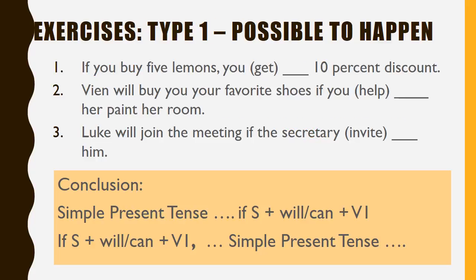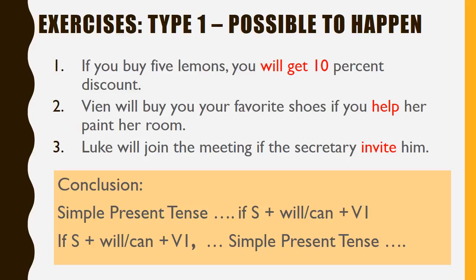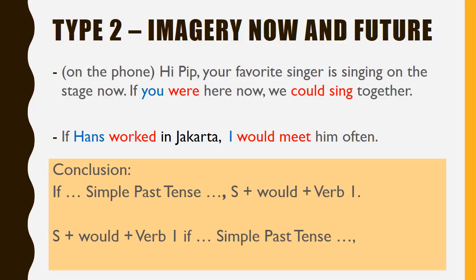Now please do the exercises for Type 1, then check your answers. Next, let's continue with Type 2. Check the examples: 'If you were here now, we could sing together' and 'If Hans worked in Jakarta, I would meet him often.'